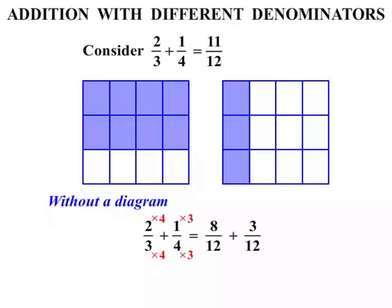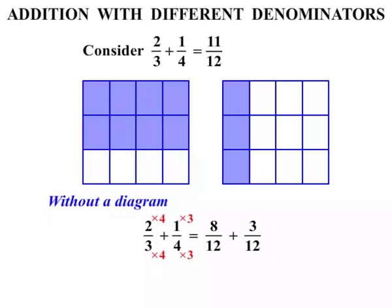So we've changed the fractions. We've rewritten two thirds as eight twelfths — and as you can see from the diagram, two thirds is the same as eight twelfths. And one quarter we've changed to three twelfths, and the second diagram shows that as well. Now it's easy: eight twelfths plus three twelfths gives us eleven twelfths. And eleven twelfths matches our answer from the diagram.